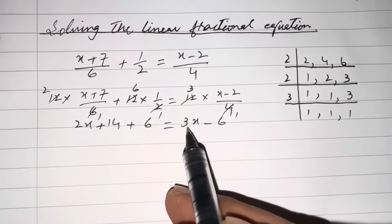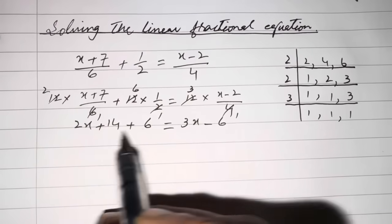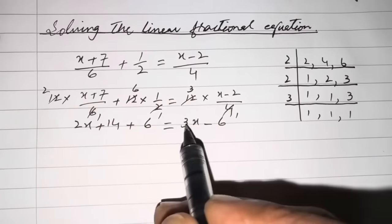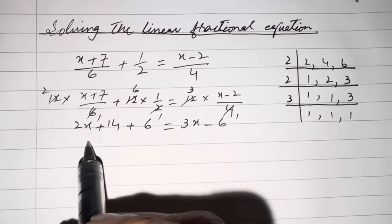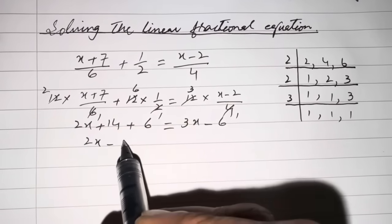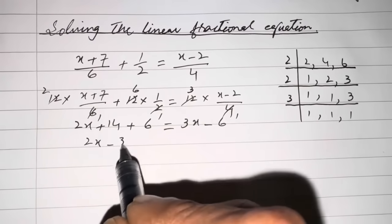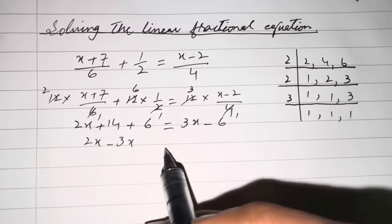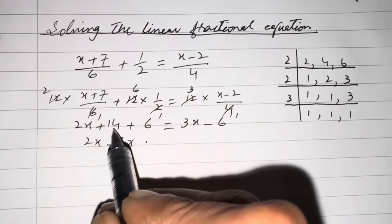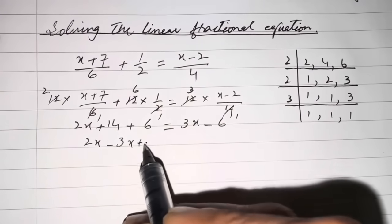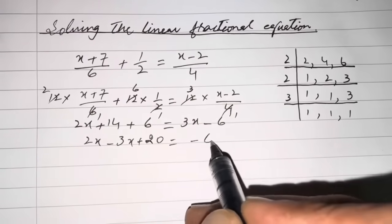Now take the x variables on one side and the constants on the other side. If you take 3x from this side to that side, it's positive here, so it will become negative: 2x minus 3x. And 14 plus 6 becomes 20, and minus 6 will be there.